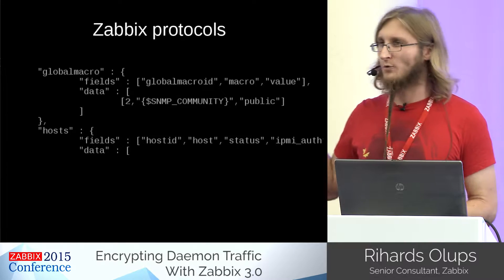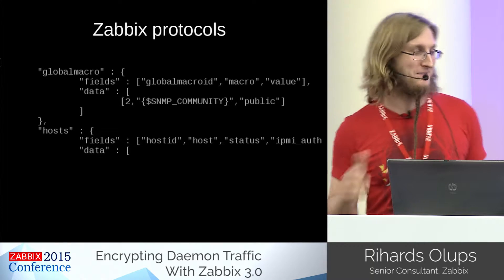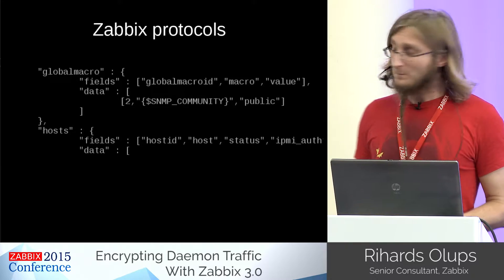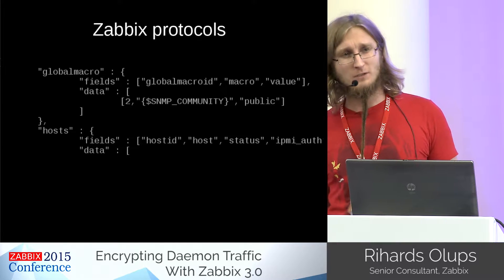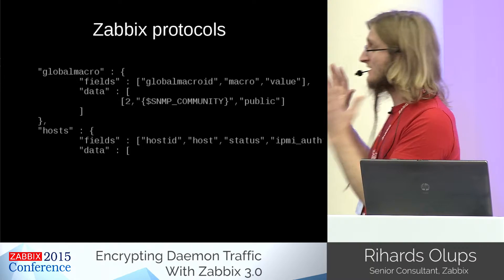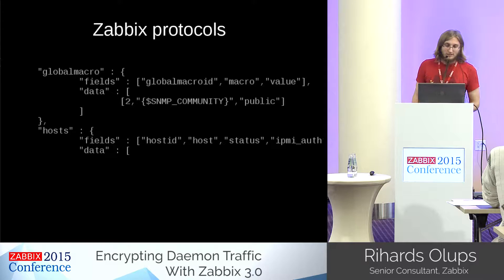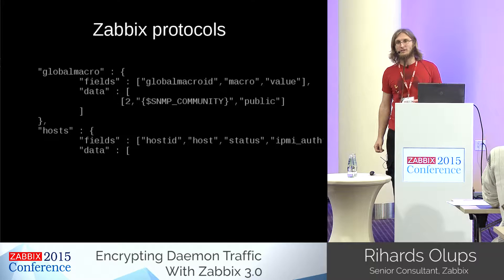The Zabbix protocol is plain text — very good for debugging because it's human readable. If you did a TCP dump, that's pretty much what you would see. You can find complete documentation on the current protocols at Zabbix.org, covering different versions and how components communicate.